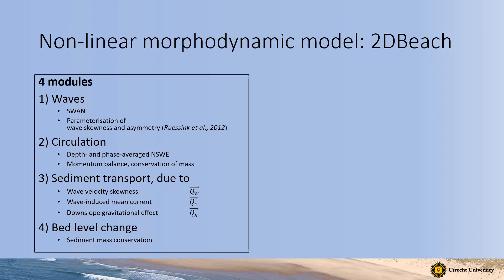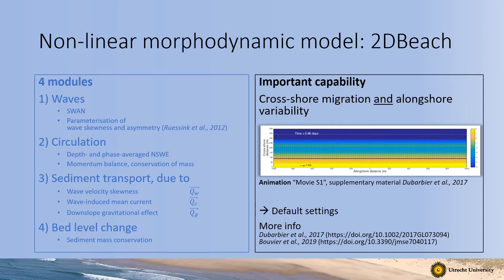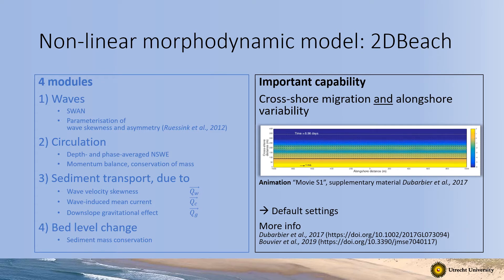Some detailed model parameters are mentioned here. This model is particularly suitable because it has the important capability of simulating the cross-shore migration of sandbars and the longshore development of variability at the same time. As shown by Dubarbier et al. in 2017, the model is able to simulate a complete downstate sequence of the sandbar morphology — from an initially straight or longshore-uniform bar down to a fully crescentic bar that attaches to the beach.